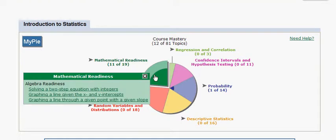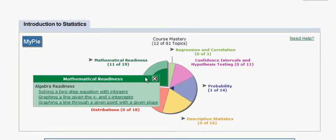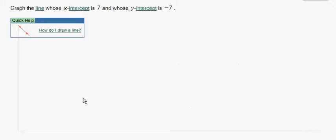Okay, continuing on in the green slice, we'll look at the list of topics here and notice that we have graphing a line given the x and y intercepts.